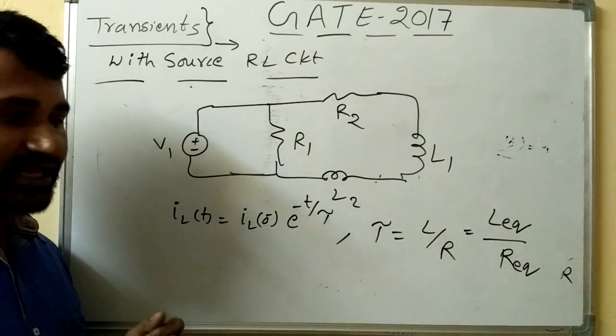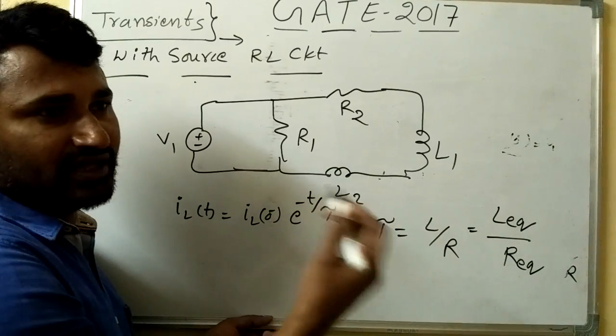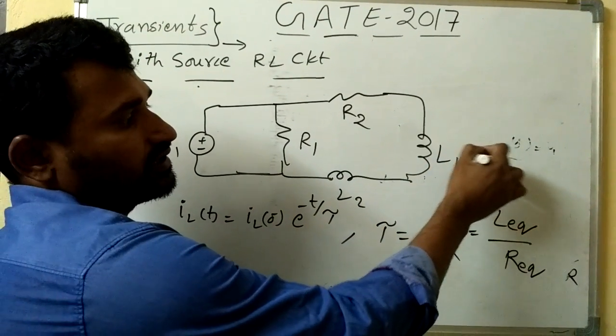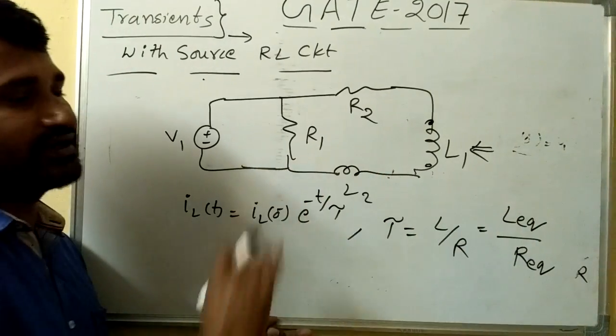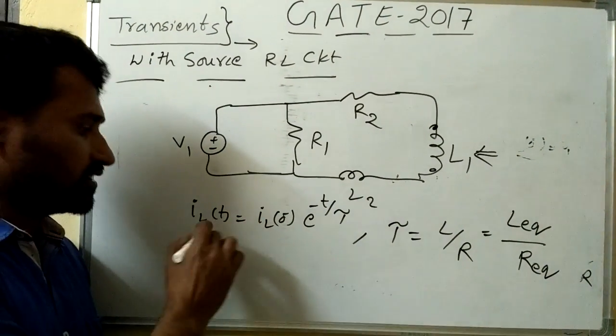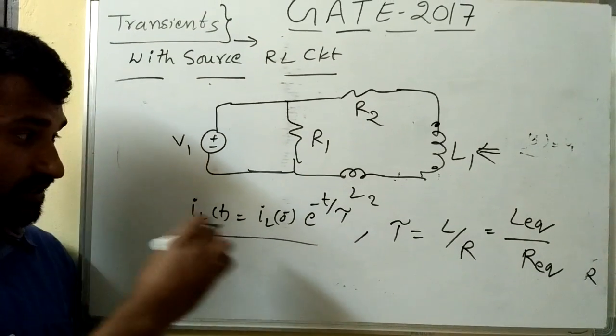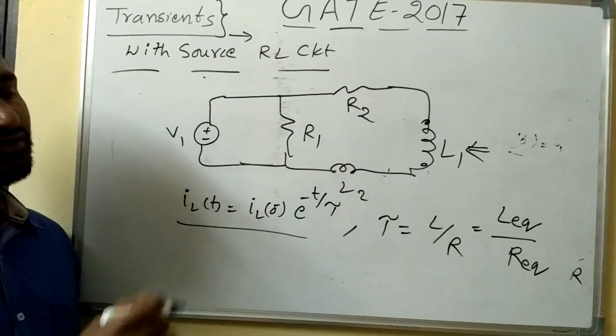So we have to find L equivalent as well as R equivalent. So L equivalent means, whenever, wherever you are finding the current, so we have to open that inductor and find the L equivalent and R equivalent, right.